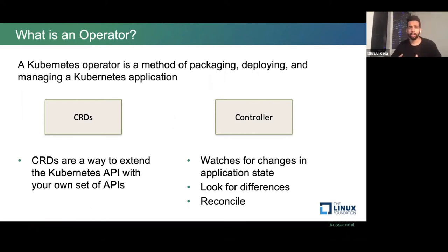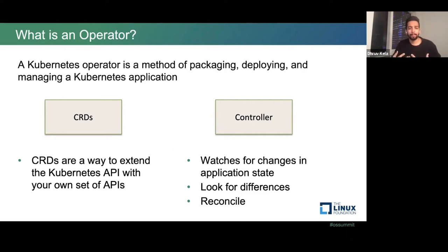Before diving deeper into the FluentBit Operator workflow and architecture, let's take two minutes to address what a Kubernetes operator is. A Kubernetes operator is a method of packaging, deploying, and managing a Kubernetes application. It can be broken down into two parts: CRDs and the controller. CRDs stand for custom resource definitions — a way to extend the Kubernetes API with their own set of APIs. By default the Kubernetes API works against pods, deployments, services, etc., but through CRDs you can extend it toward your own application.